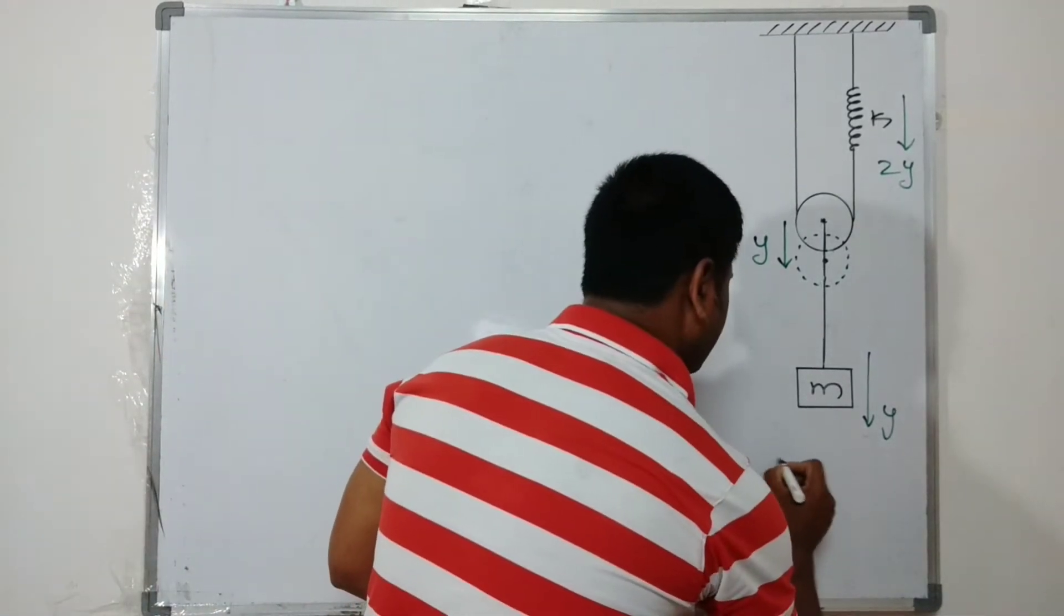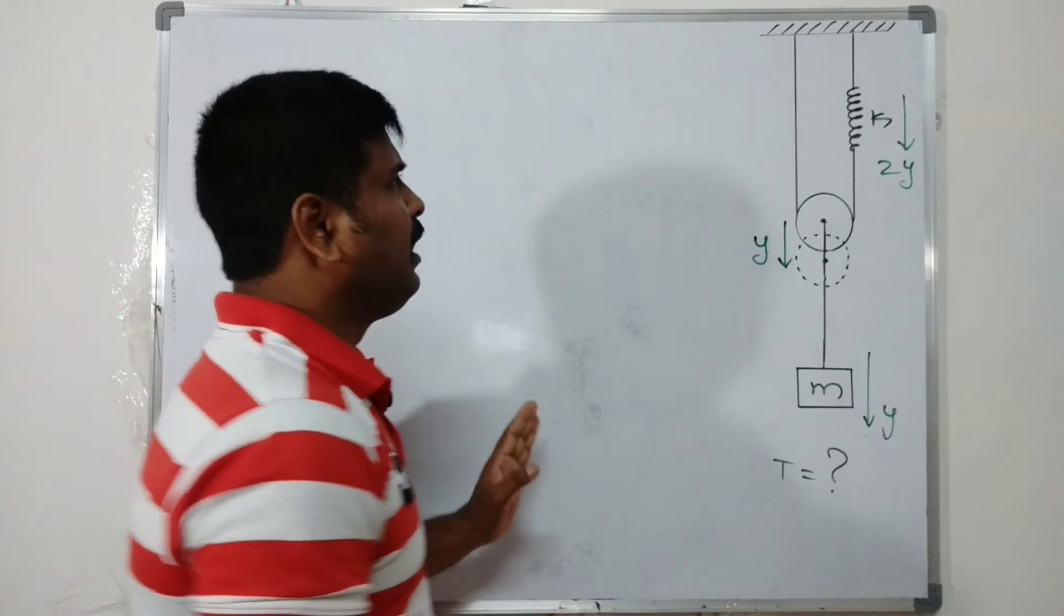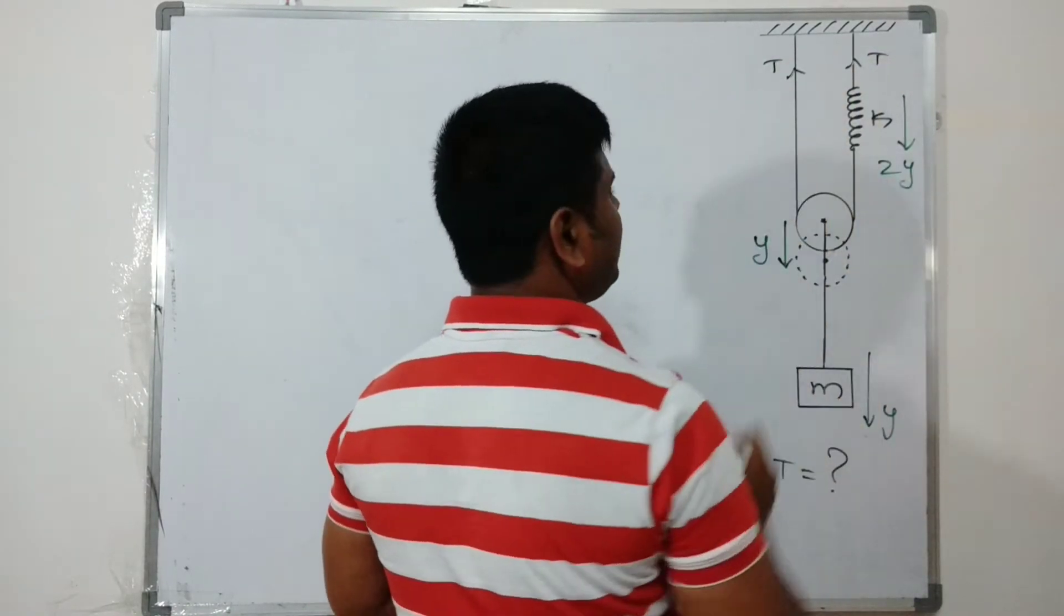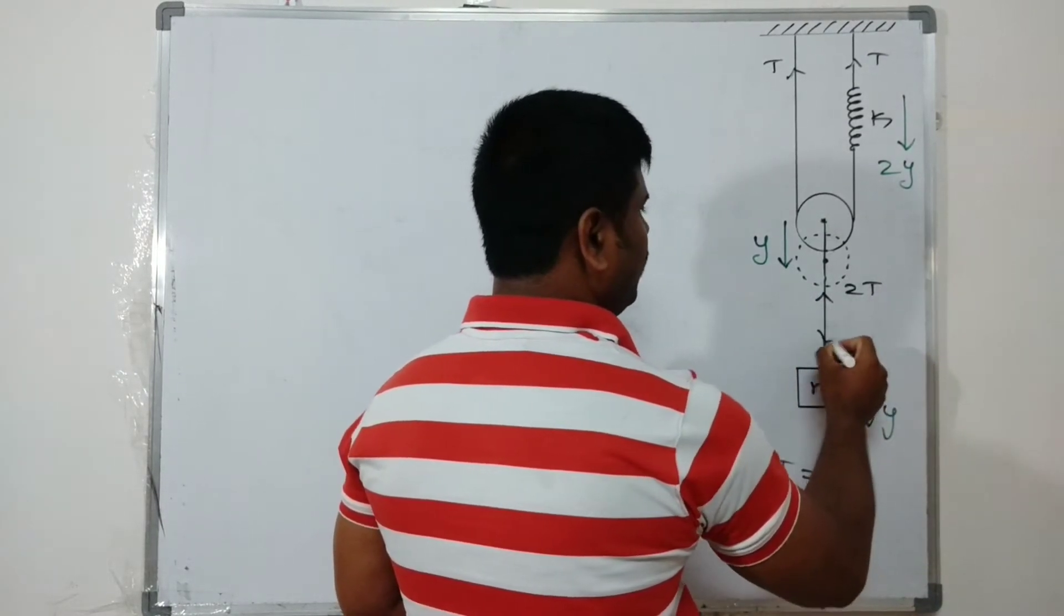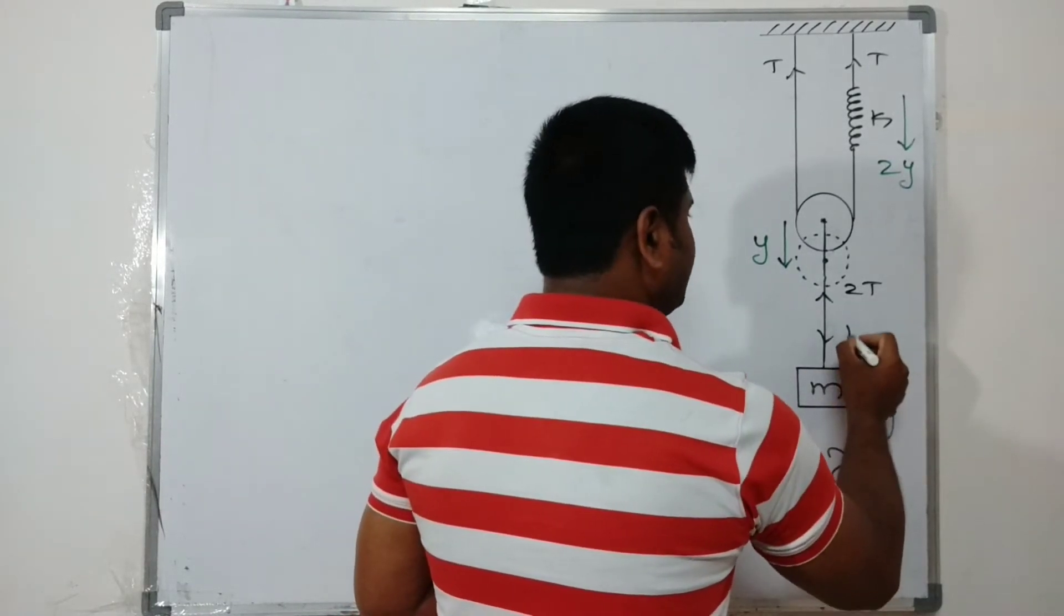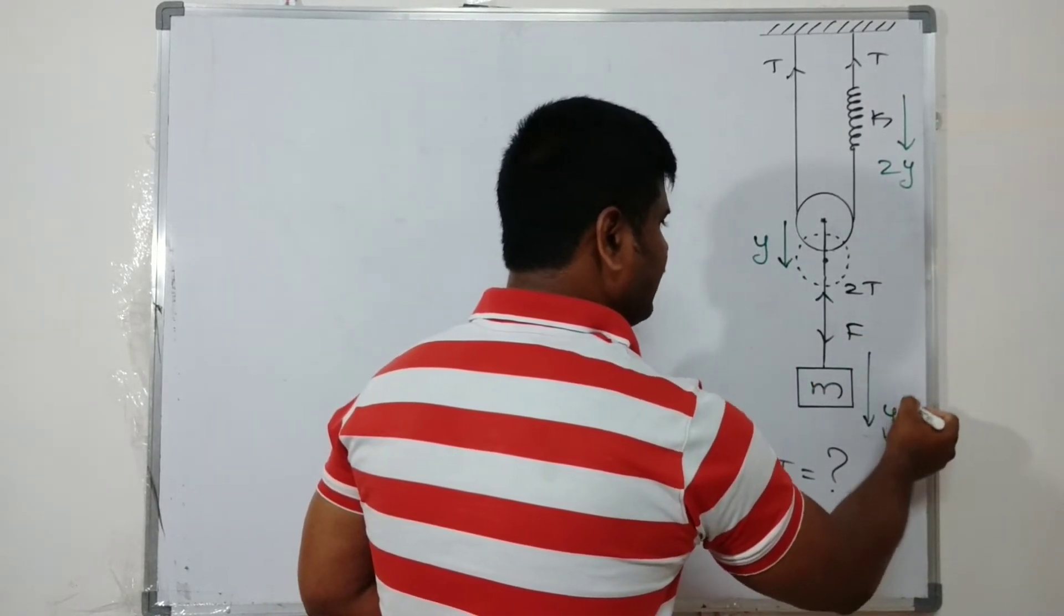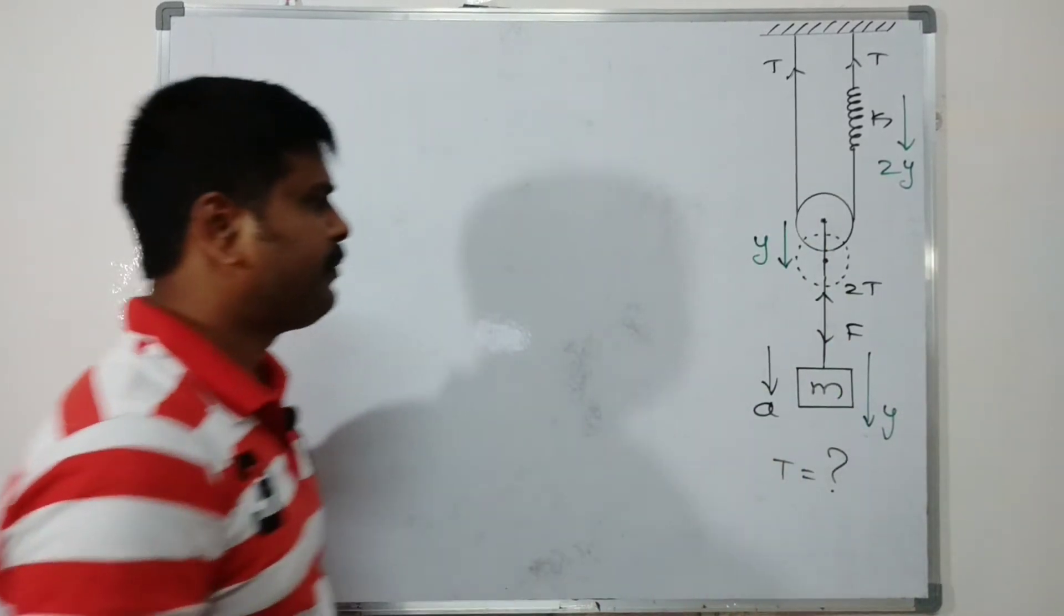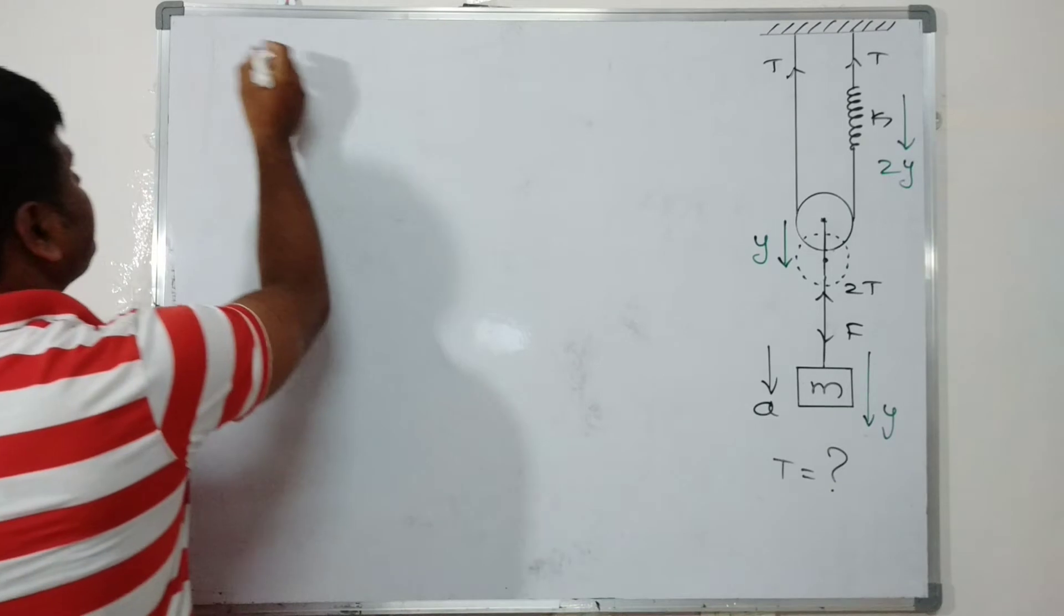Now we can discuss - we want to find the time period according to the question. So what is asking here: T = question mark. Try to understand, tension T is acting here, and here also tension T. So total downward force is 2T. The body is moving downward direction with acceleration a.